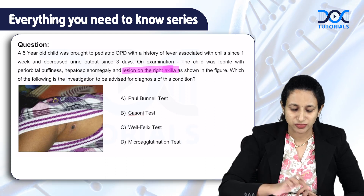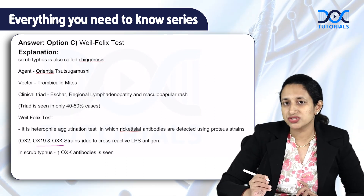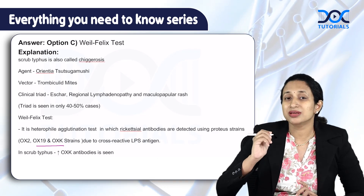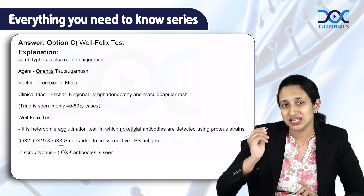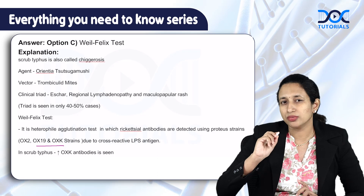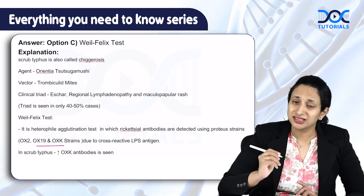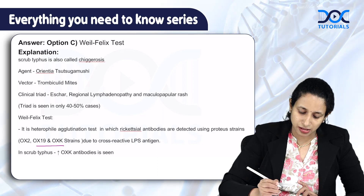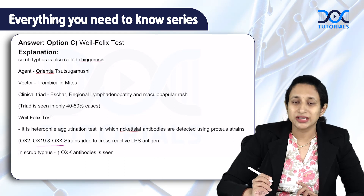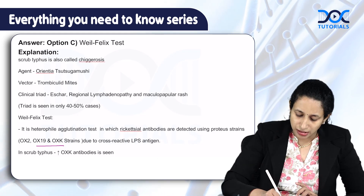The important points to remember about scrub typhus: First, scrub typhus is also called chigurosis, because the mite stage known as the chigger is the only one which comes in contact with humans and is responsible for disease. The condition is caused by an agent called Orientia tsutsugamushi. The vector is called Trombiculid mites, which are the ones that spread the disease.